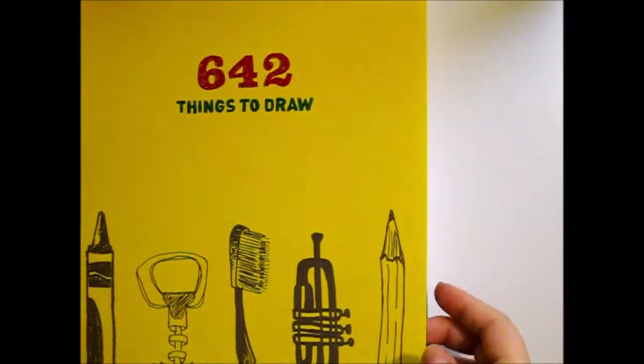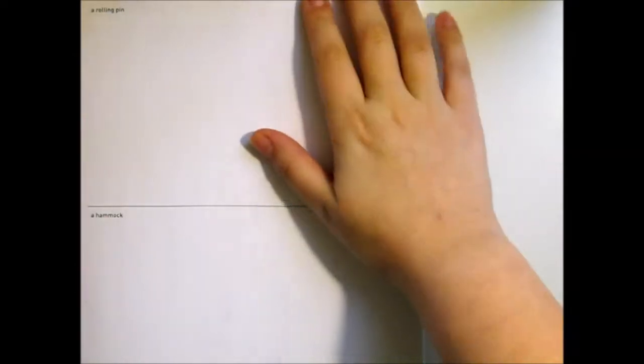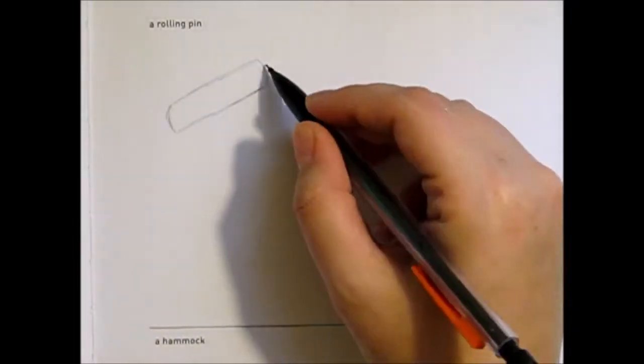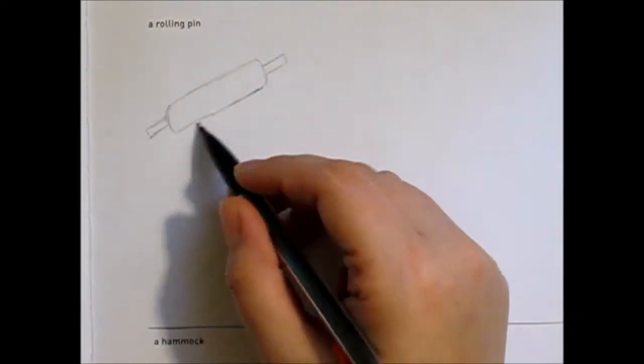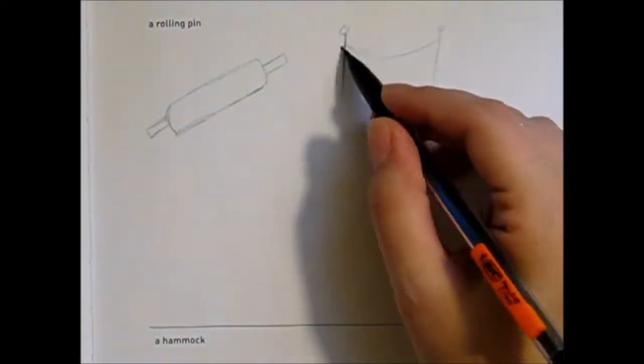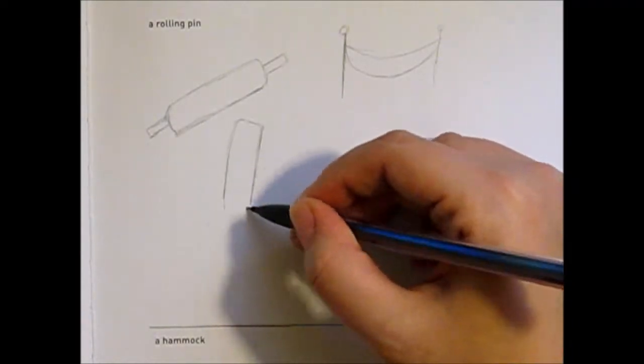Alright, so our first prompt is a rolling pin and a hammock. To start this prompt, I just wanted to start by sketching out what a rolling pin and a hammock look like. I had no idea what I wanted to do for this prompt, so I figured the best way to start is to see if I could actually draw these things.